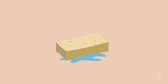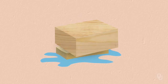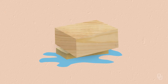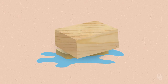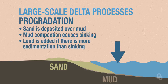Think of a sponge with water in it — if you put something heavy like a block of wood on top of it, it's going to sink down and expel some of the water. That's sort of what happens to the mud. So long as there's more sedimentation than there is sinking, you will still get progradation, or adding of land.